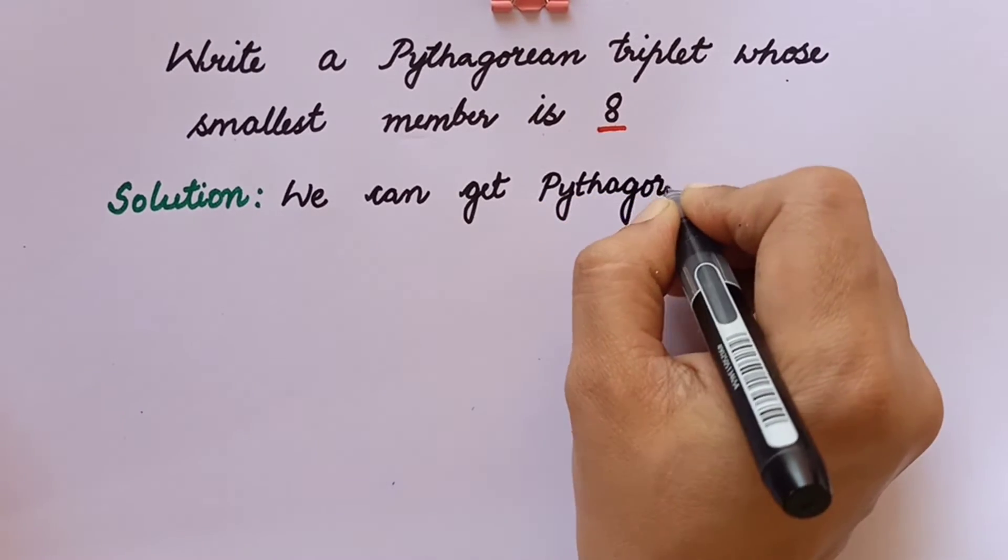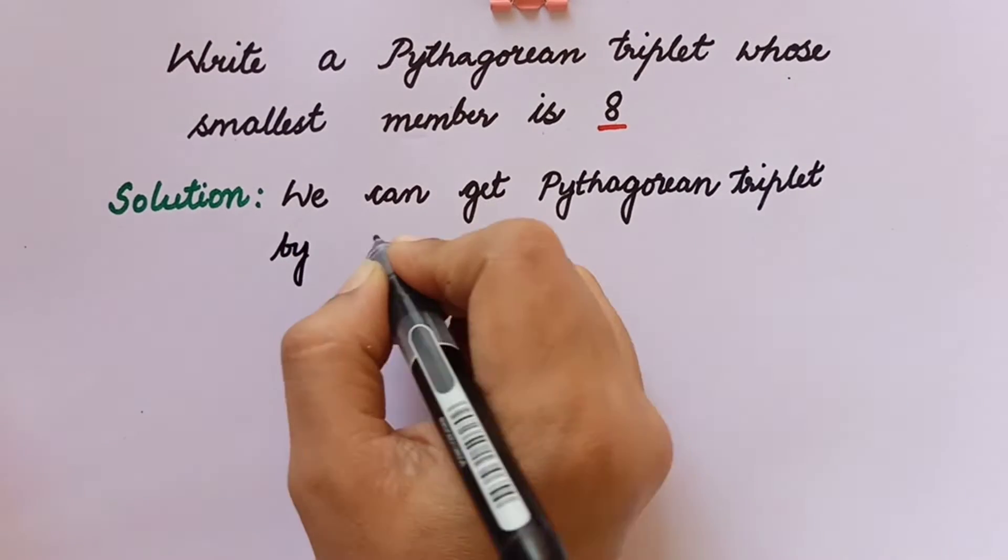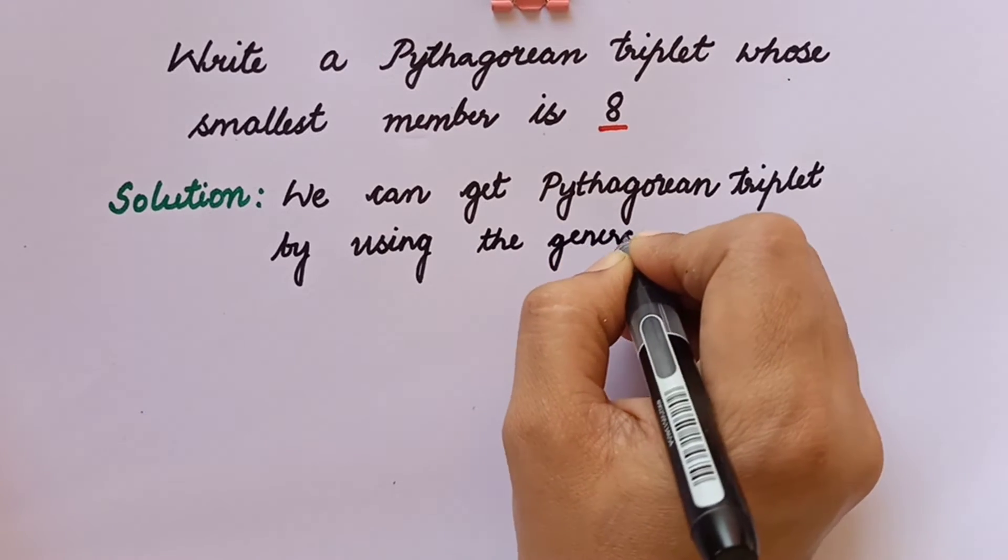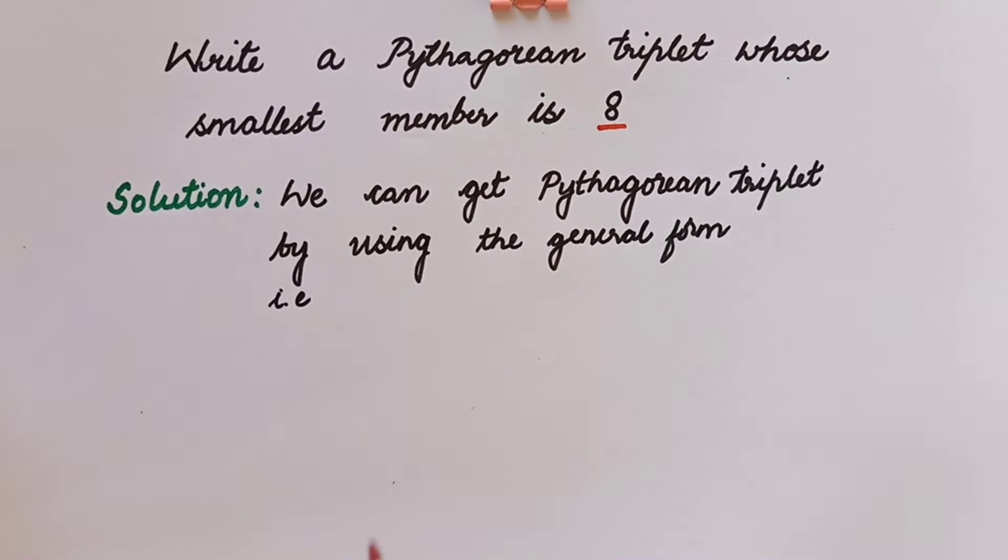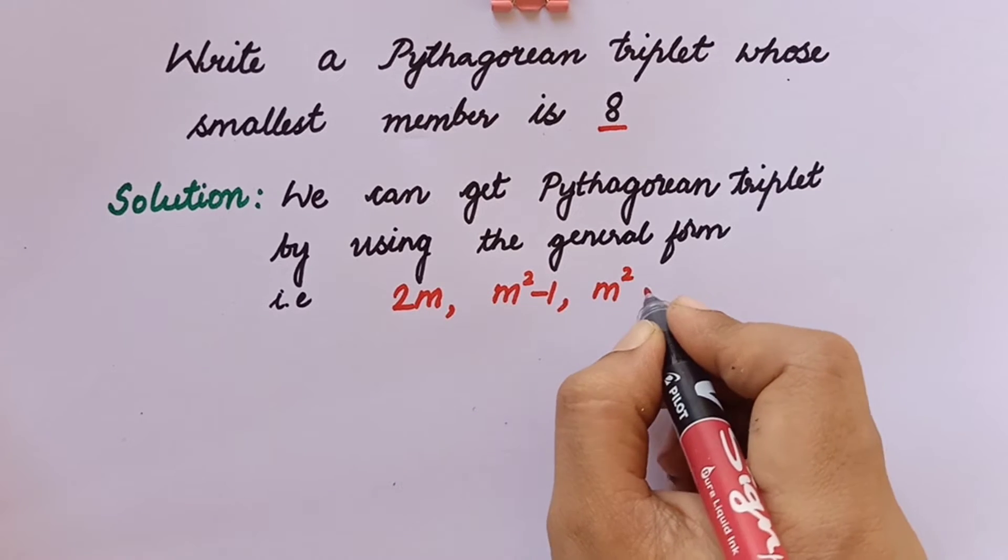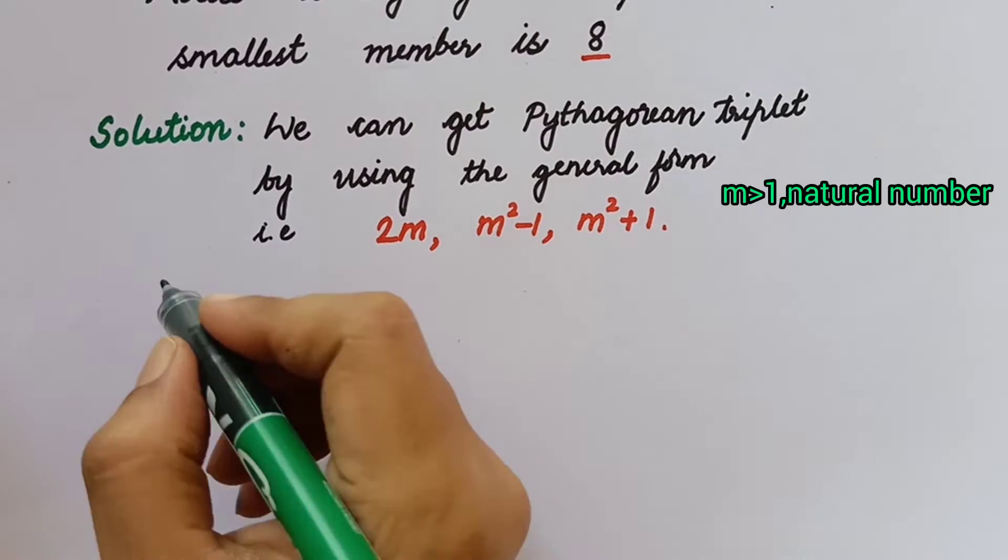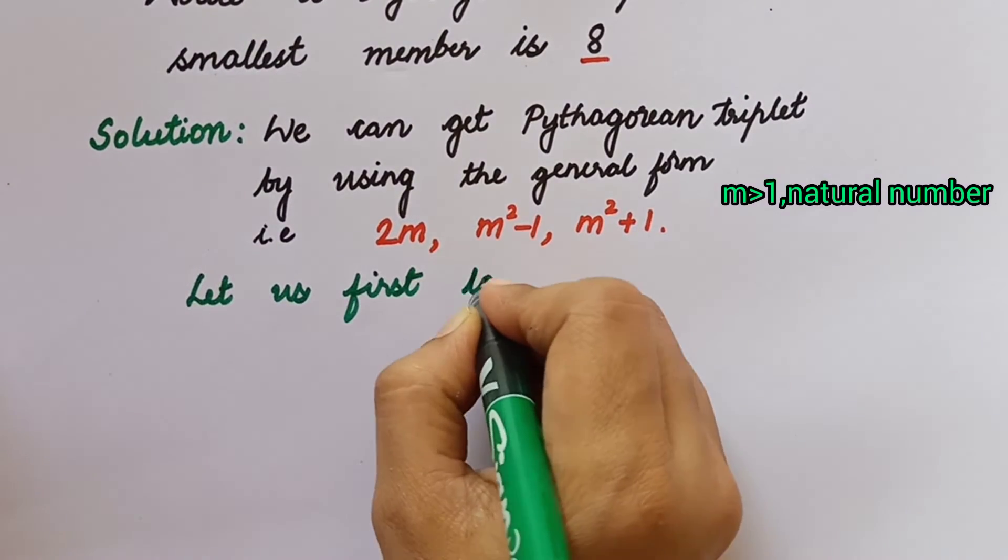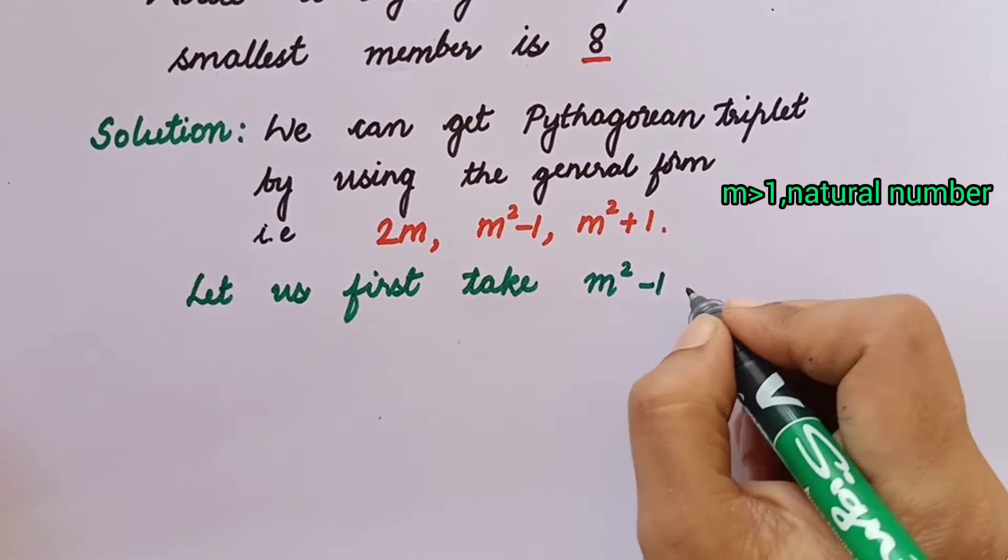We can get the Pythagorean triplet by using the general form: 2m, m square minus 1, m square plus 1. The condition is m should be a natural number and it should be greater than 1. So let us first take m square minus 1 and we'll equate this to 8.